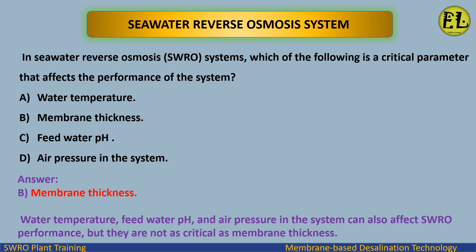The answer is B — membrane thickness. Water temperature, feed water pH, and air pressure in the system can also affect SWRO performance, but they are not as critical as membrane thickness.